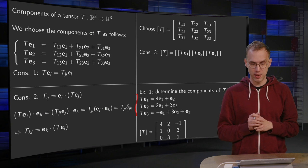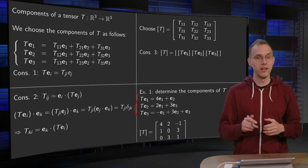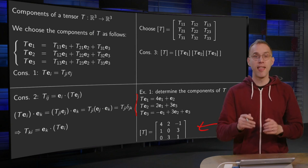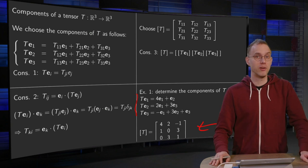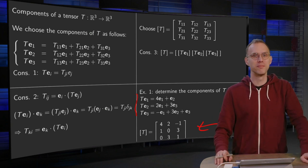And T of E3 equals minus 1E1 plus 3E2 plus 1 times E3, so our third column will be minus 1, 3, 1. So there we have our matrix T. And as you may notice, this is exactly the same as you learned in linear algebra.